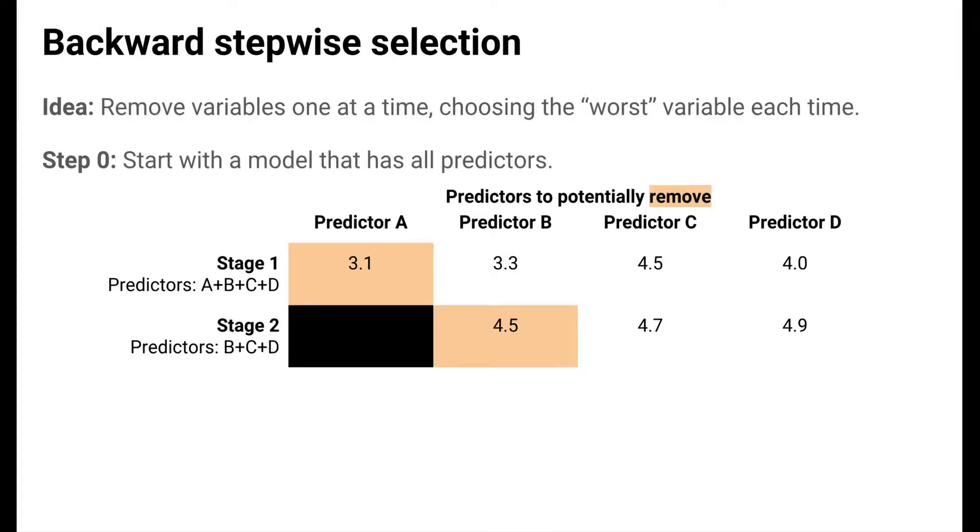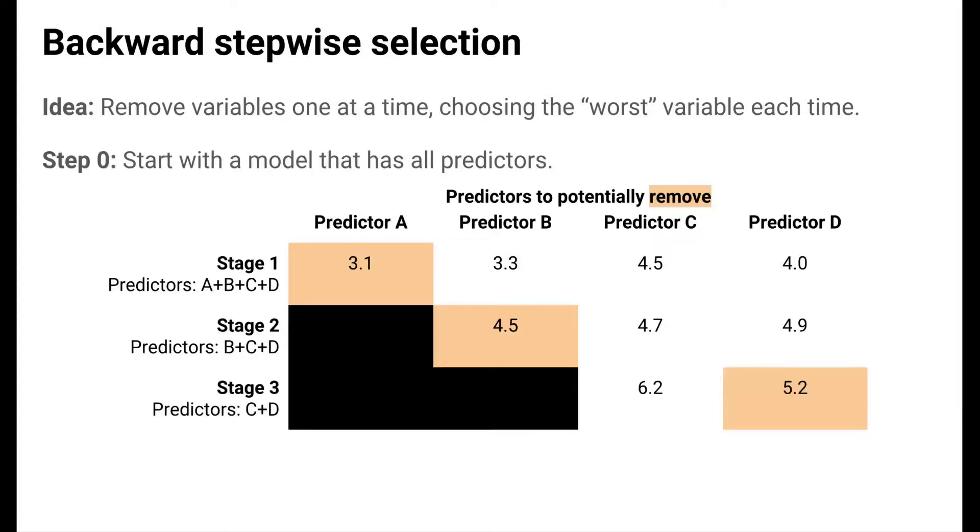So we remove A, and in stage 2 we start with a model with B, C, and D. Now we consider removing one of these. This time removing B results in a model with the lowest cross-validated mean squared error. Removing B does the least harm. So in stage 3, we remove B and start with a C plus D model. We consider removing one of these; this time removing D does the least harm.